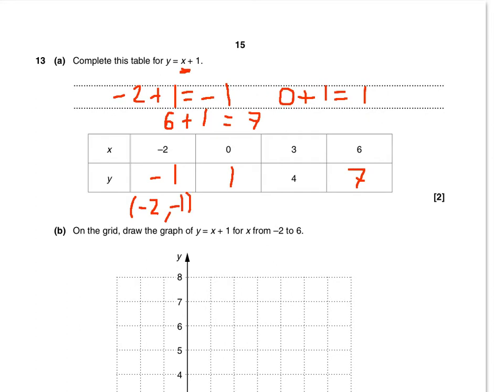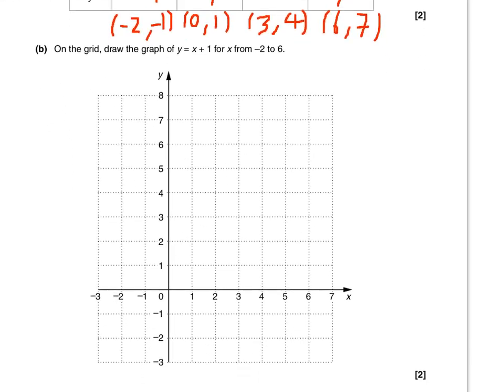The x is 0, the y is 1. When x is 3, the y coordinate is 4. And when the x coordinate is 6, the y coordinate is 7. So we can actually plot these values on the grid provided.